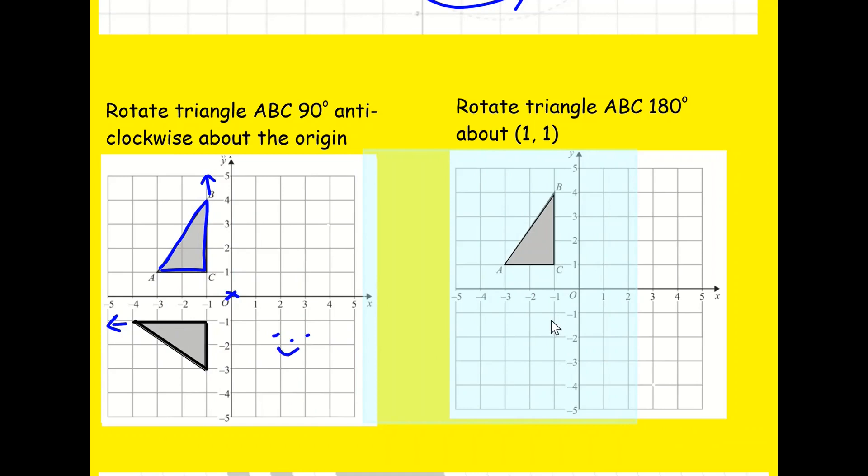So that is our first example. Tracing paper is the way to go. So let's try that for the second one. Put our tracing paper on top. Let's highlight the centre of rotation. In this case, it's 1,1, so it's here. Draw an outline of the shape on the tracing paper. Put an up arrow if you like. And then put your pencil on the cross. Rotate it 180 degrees.